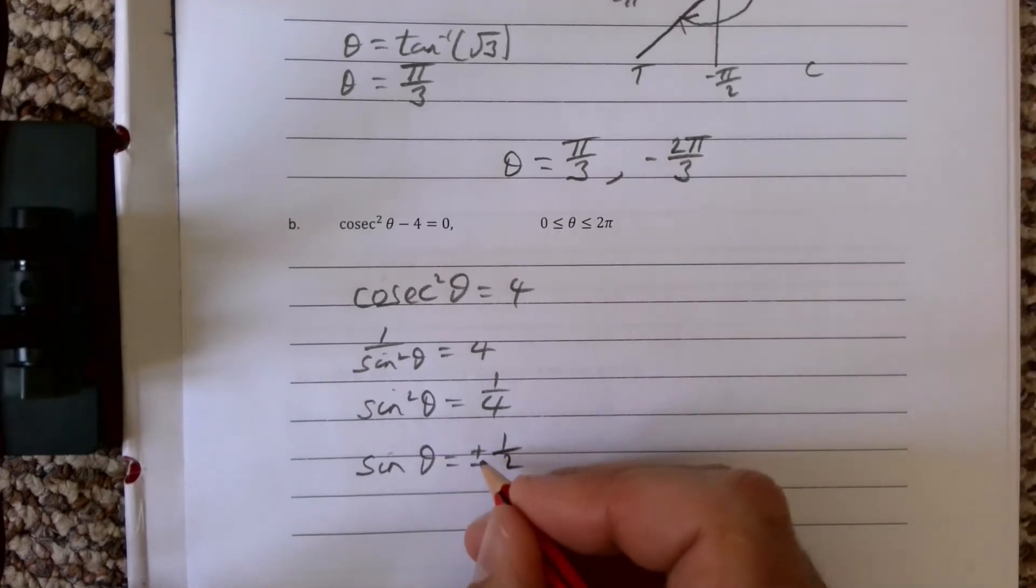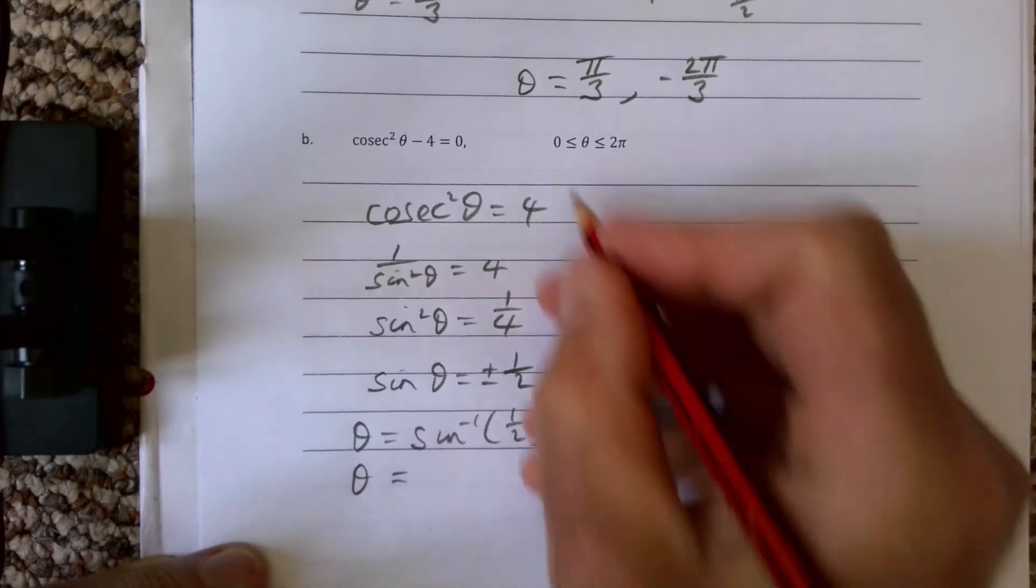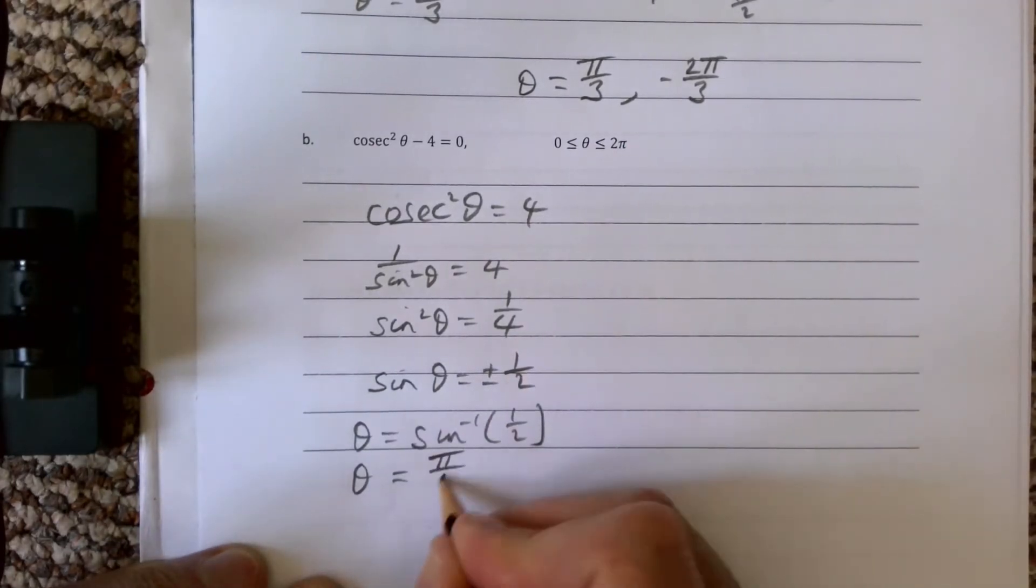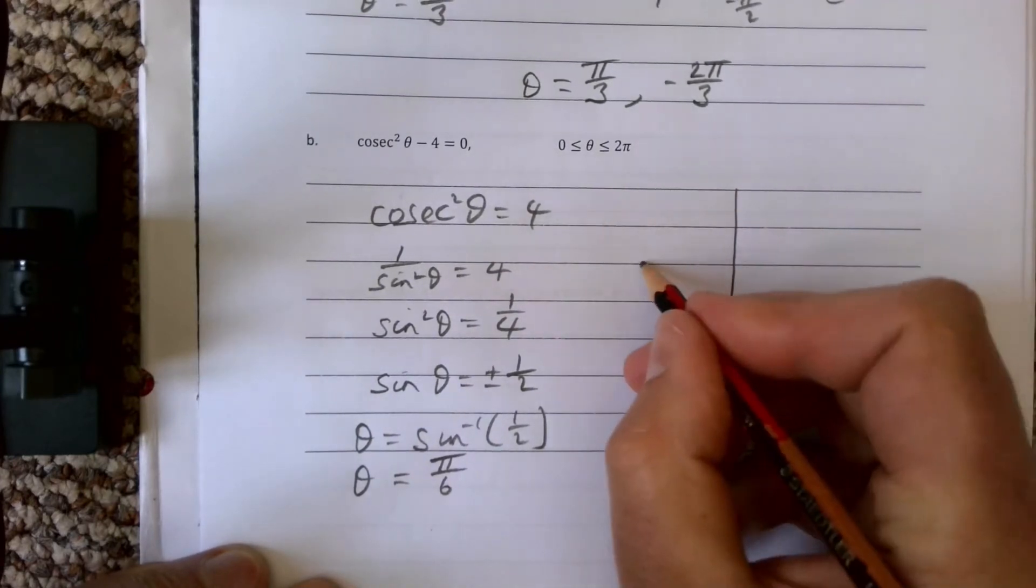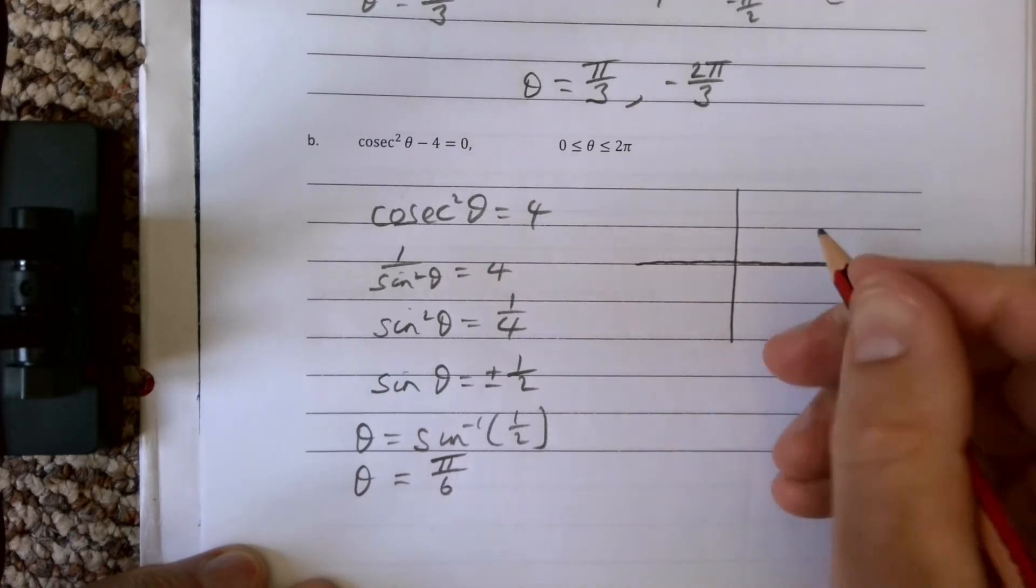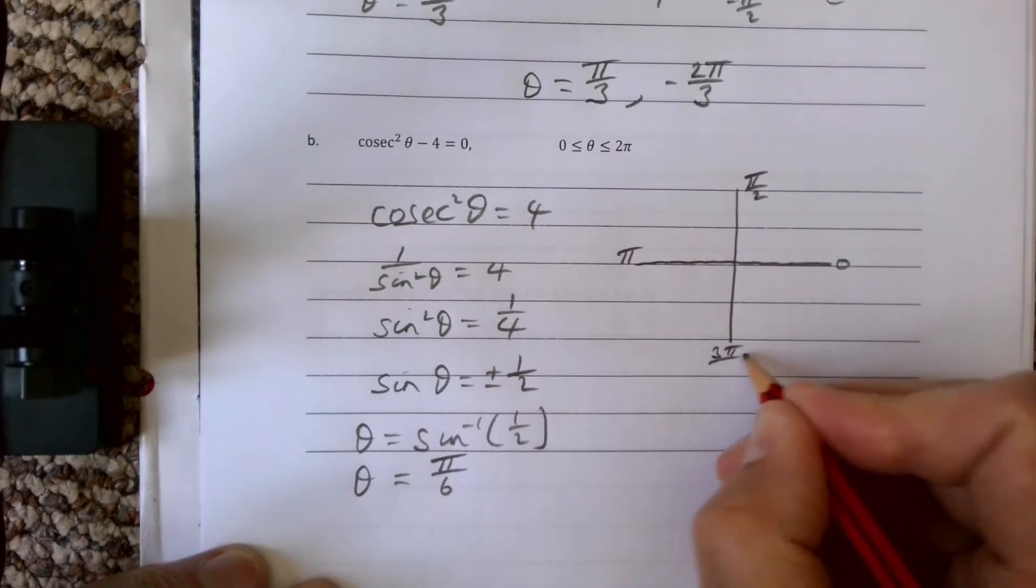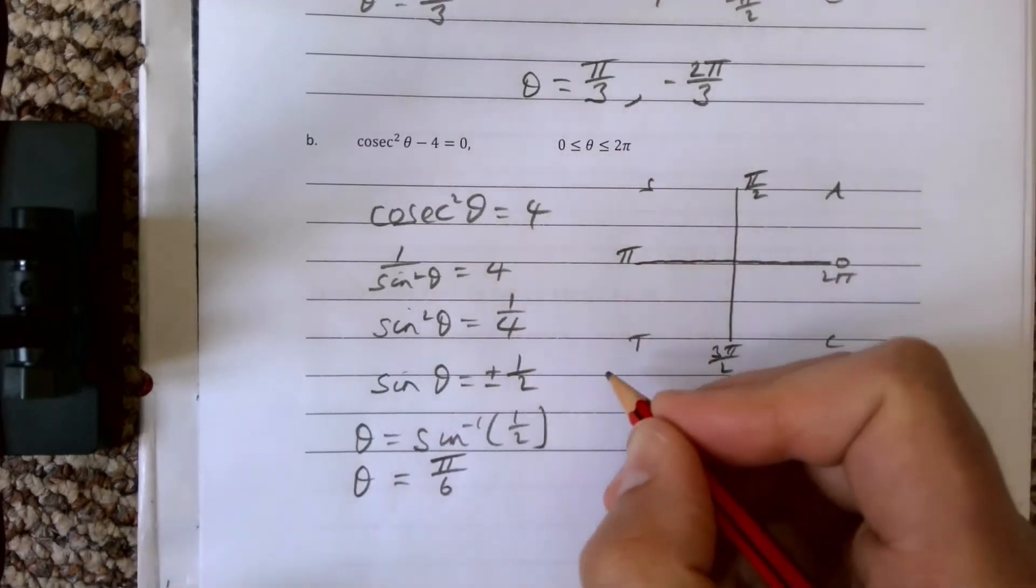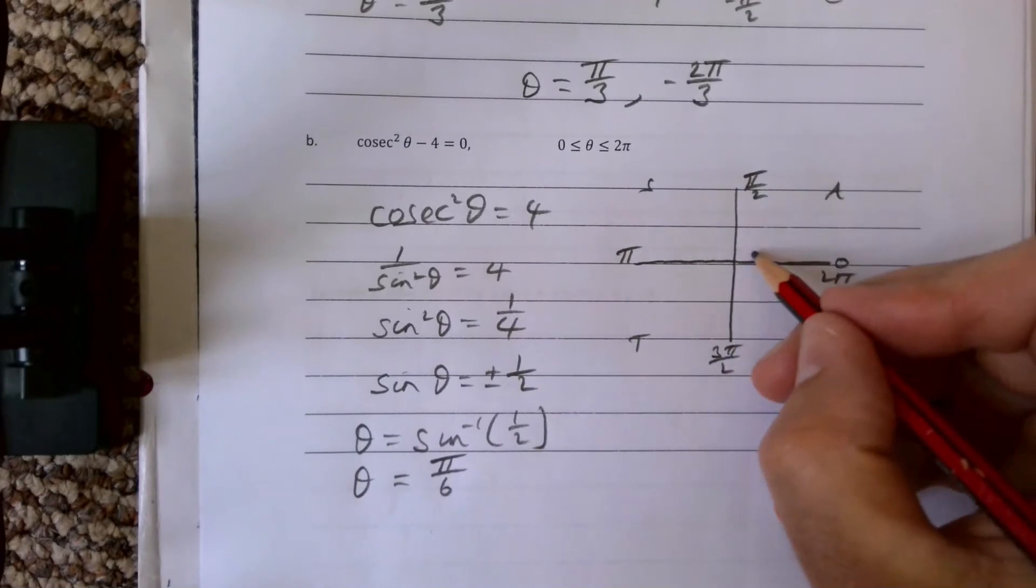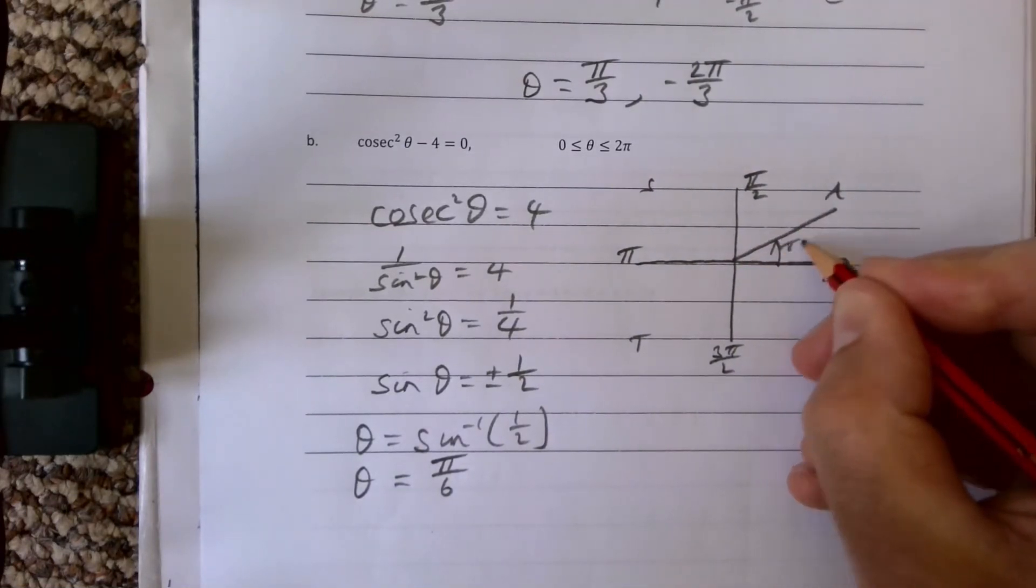We need to find our values then. Get our basic angle again. Theta is sin⁻¹ of a half, and our theta in this case is going to be π over 6. Let's draw our CAST diagram. Remember, last one we went between π and minus π; here we're going between 0 and 2π.